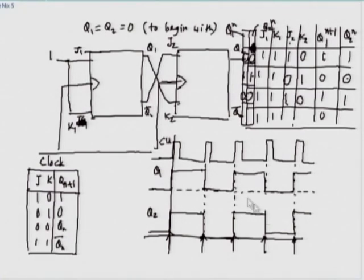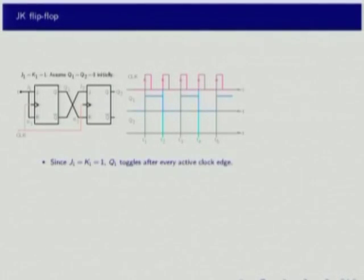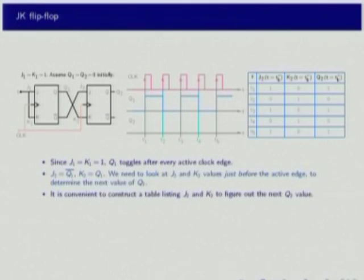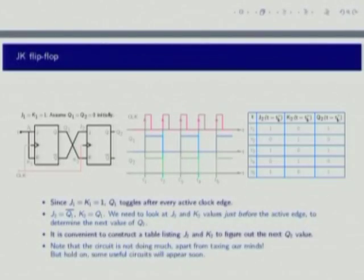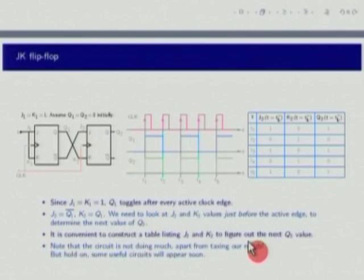The point here is not what the circuit is doing, but how to go about drawing these waveforms. This kind of systematic table is very important - without it, you can easily get lost. It is better to write down this table and then complete the waveforms. This circuit is not really doing much apart from toggling, but some useful circuits will appear soon and we will start looking at counters in the next presentation.